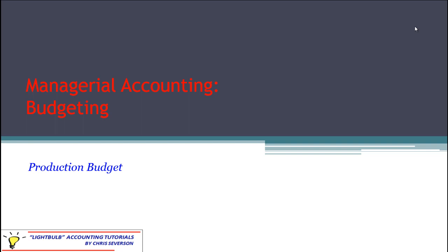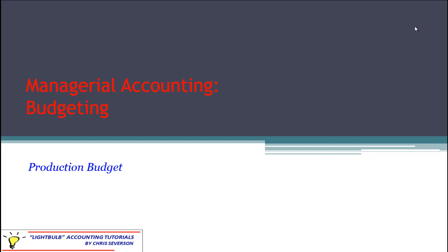If we're going to produce a certain number of units, we need to make sure we have the materials, labor, and overhead to do so. With the production budget, keep in mind this has to be produced after the sales budget. We need to know what we're going to sell before we can determine what we're going to produce.